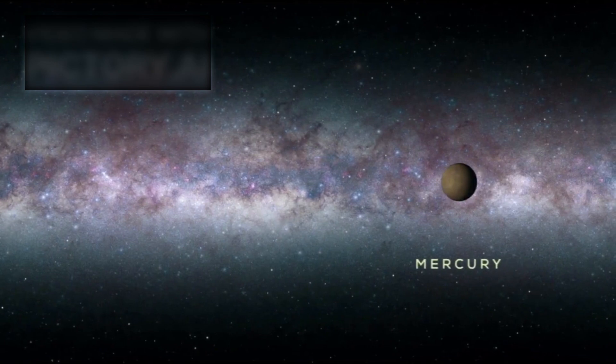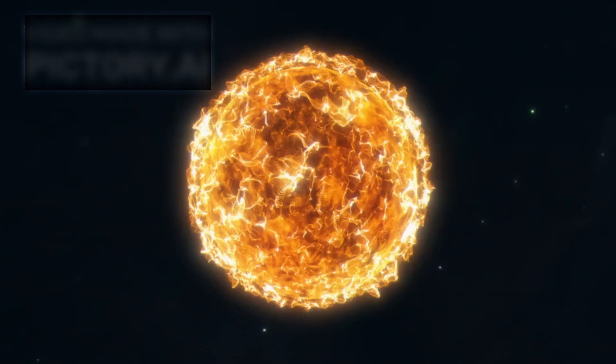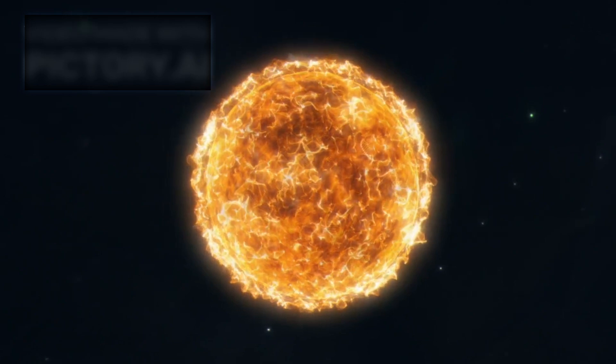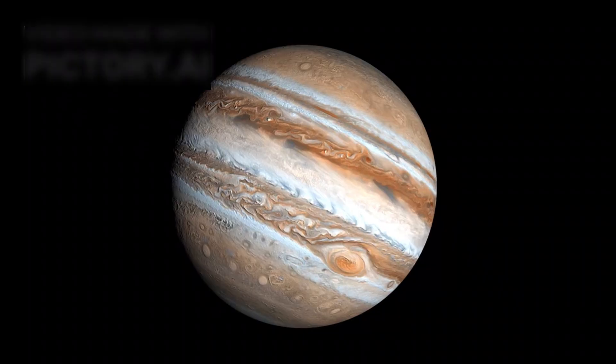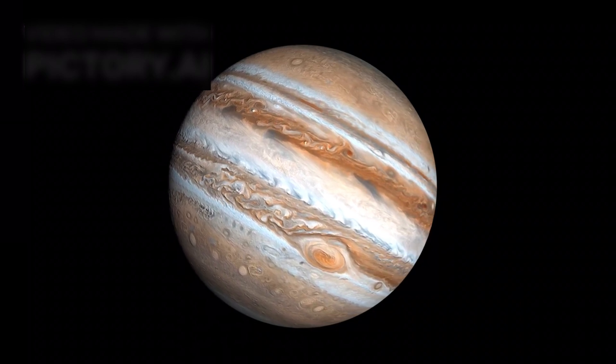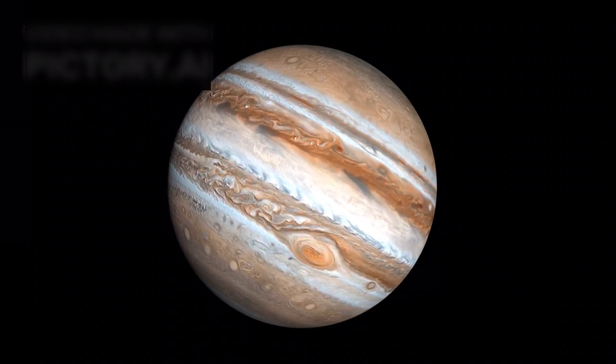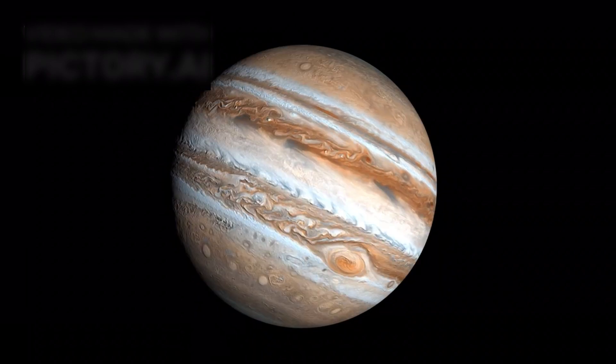To understand why Betelgeuse is so important, we first need to appreciate its scale. This colossal star is estimated to be over 700 times the diameter of our Sun. If it were placed at the center of our solar system, it would extend beyond the orbit of Jupiter, engulfing Mercury, Venus, Earth, Mars, and the asteroid belt entirely.